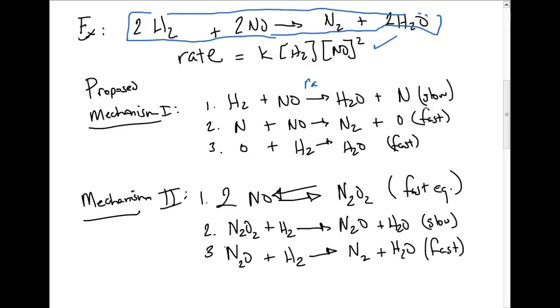So this is going to be rate equals k[H2][NO]. And does that match the rate law? It does not match the rate law because NO is not second order.